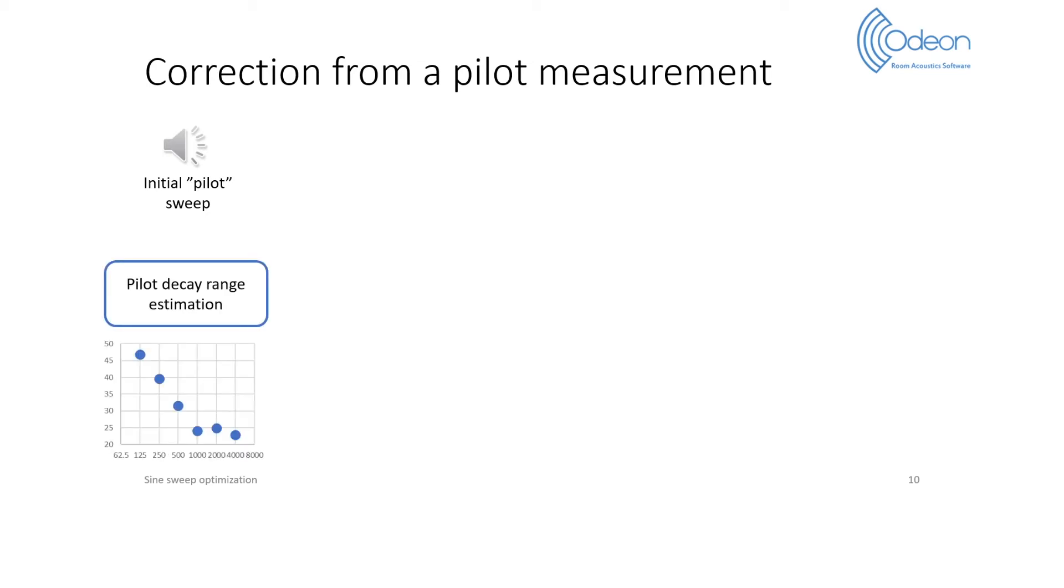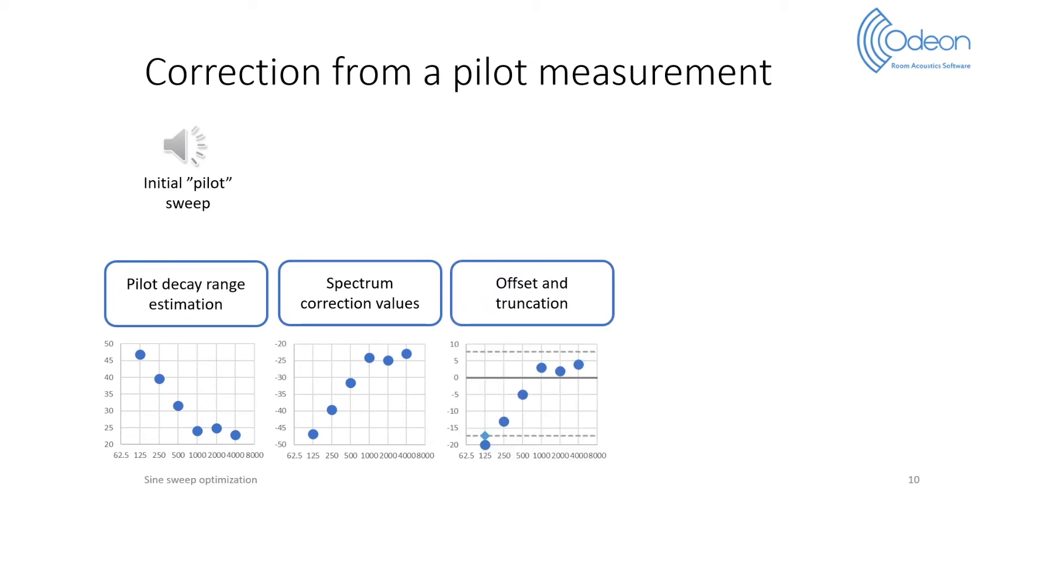We make a first impulse response measurement with this sweep, from which we obtain the decay range per octave band. An initial set of spectrum corrections is found as the negative of the decay ranges. Then the corrections are offset and truncated if needed, as explained for manual corrections.